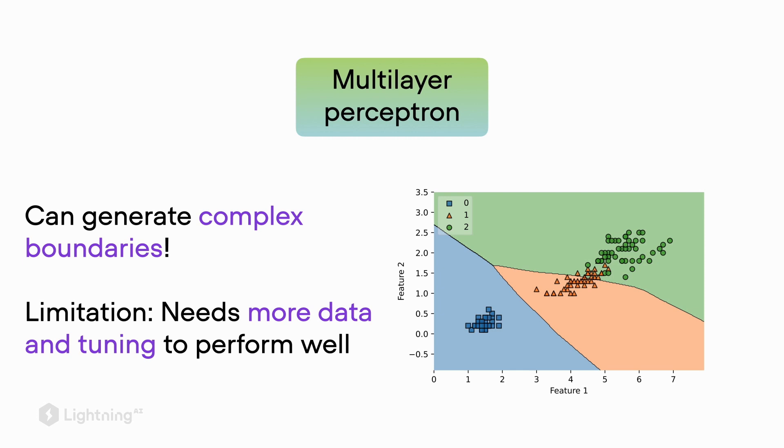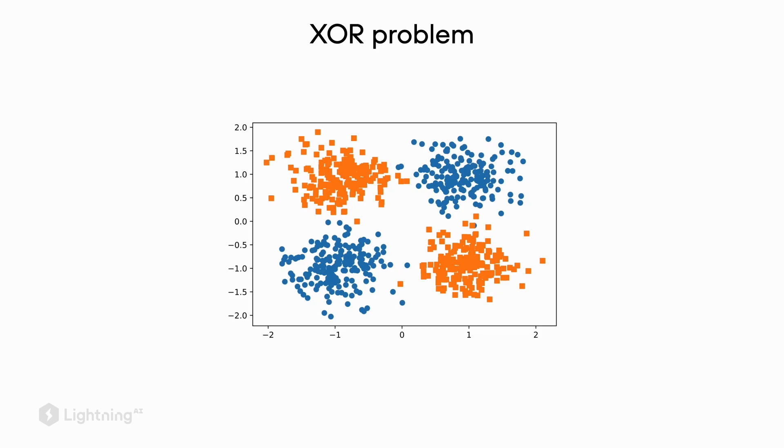To illustrate the benefits of these complex decision boundaries, consider the simple XOR problem. Here we have two classes—the orange class and the blue class—arranged in four different dots. This is a case where we can't separate the two classes by a linear boundary.